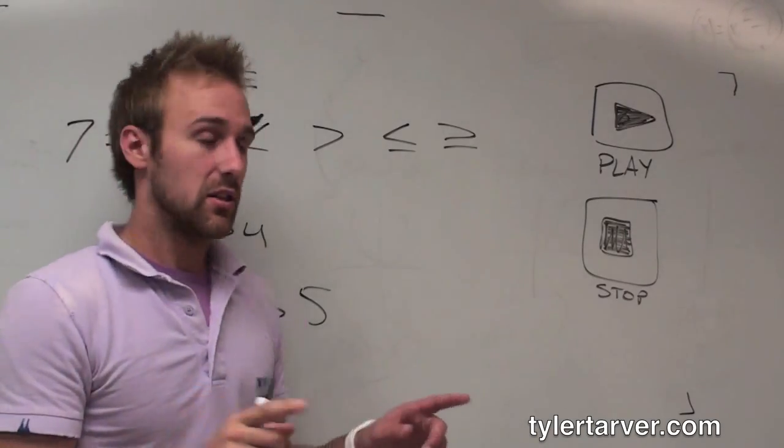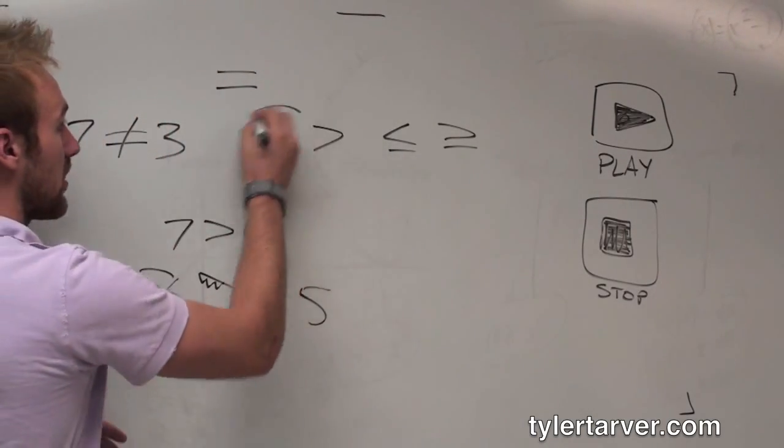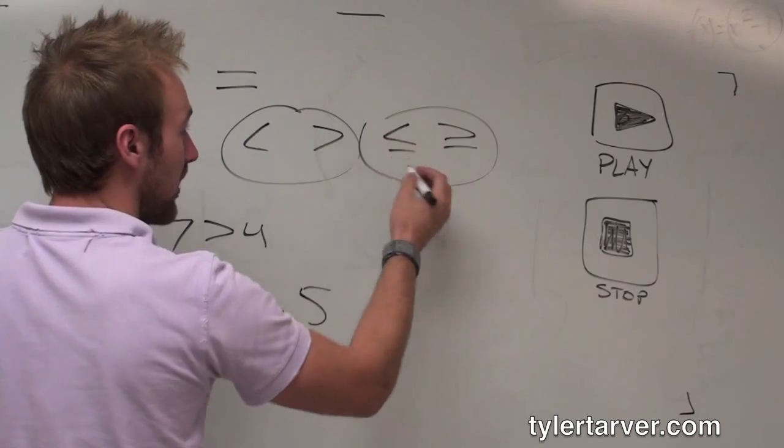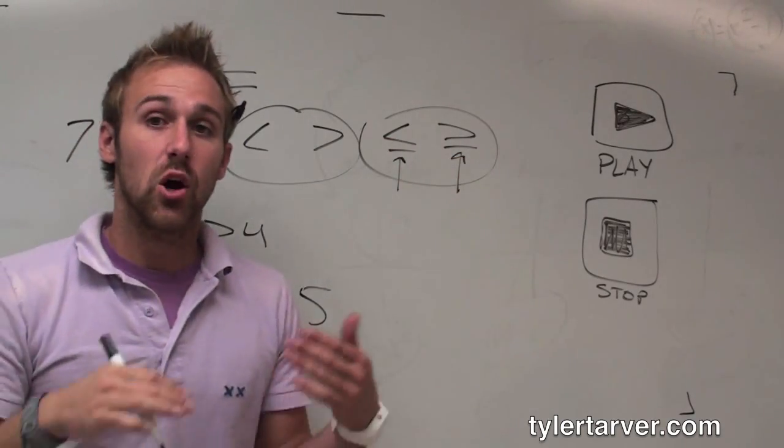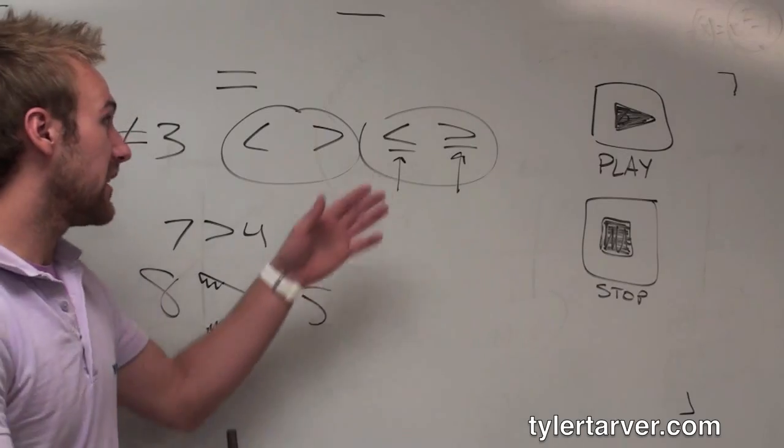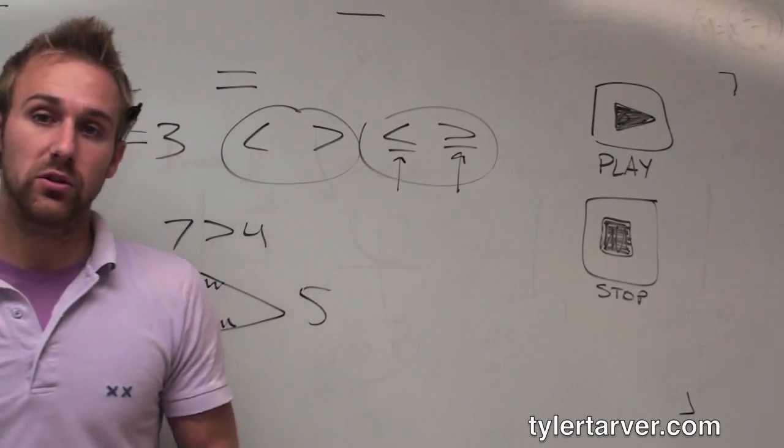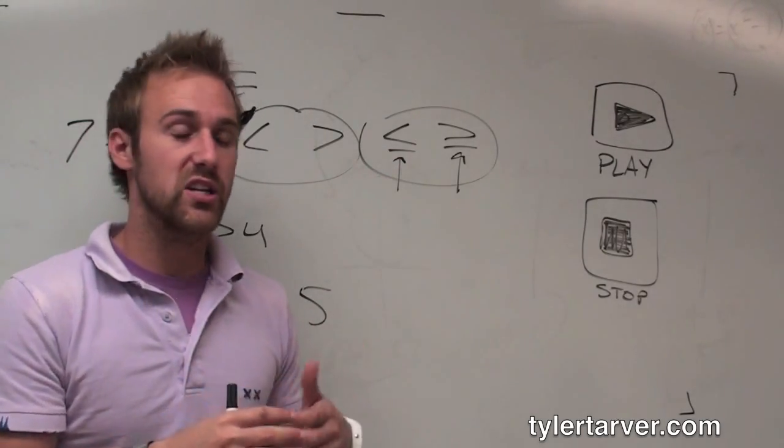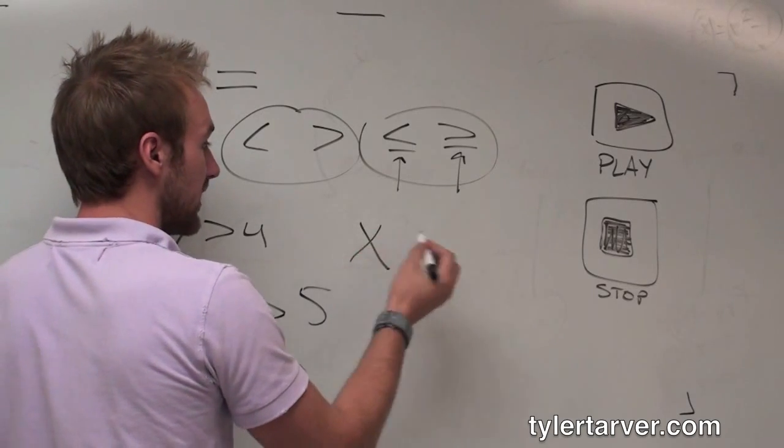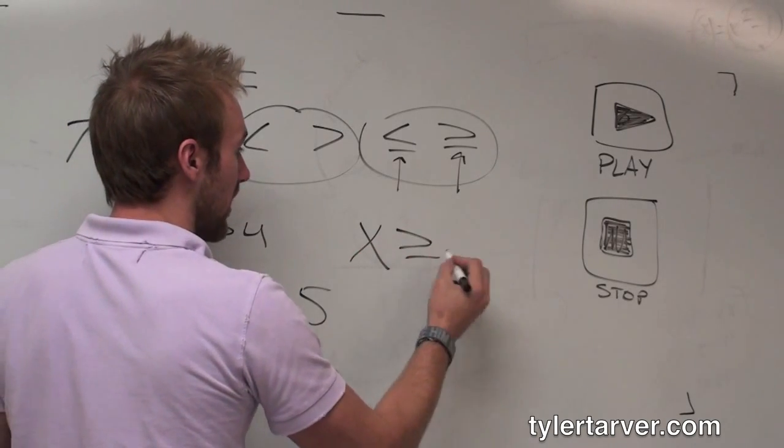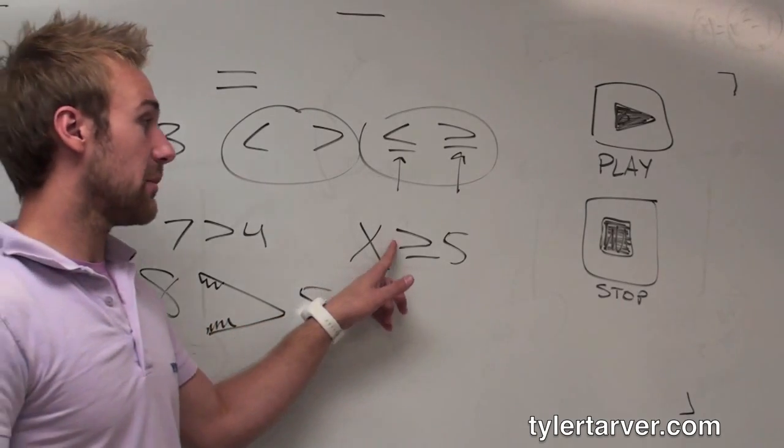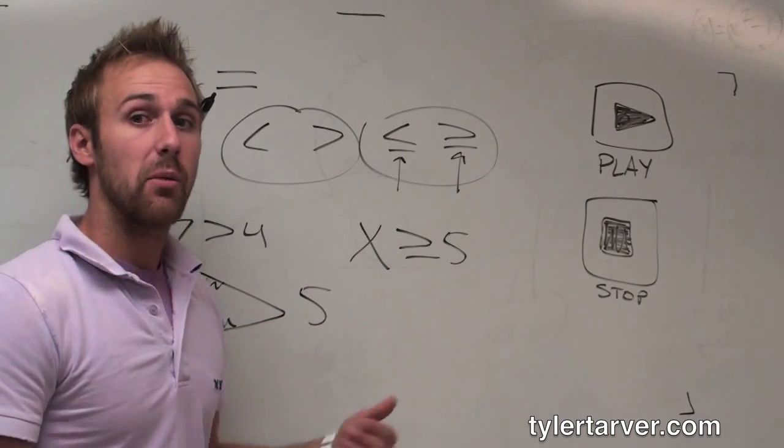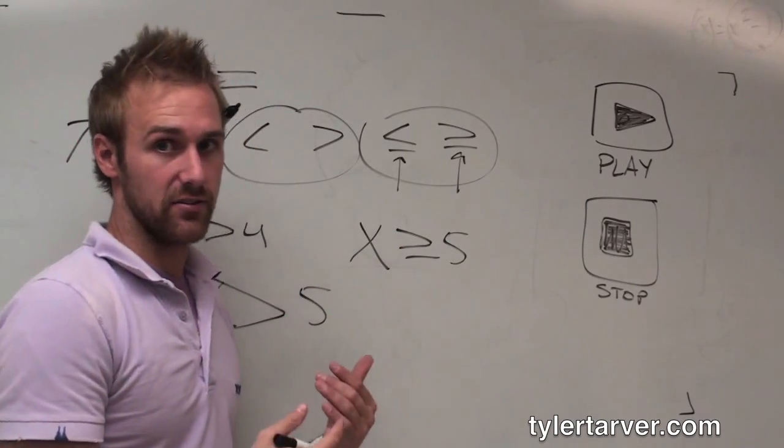Now, the only difference between these and these is this line underneath it. That means or equal to. It means that it's something greater than it or equal to. So whenever we're working our equation, if we get x is greater than or equal to 5, that means x is going to be bigger than 5, but it also can be 5. The smallest thing x can be here is 5.